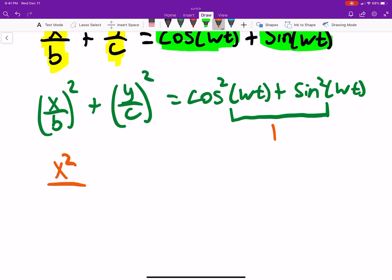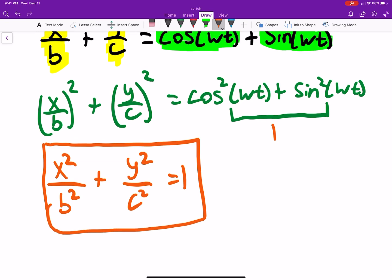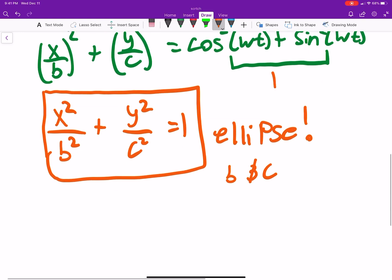So, x squared over b squared, we square everything, plus y squared over c squared is just equal to 1. So, you hopefully recognize this as the equation of an ellipse, where we have b and c, which are your major and minor axis.